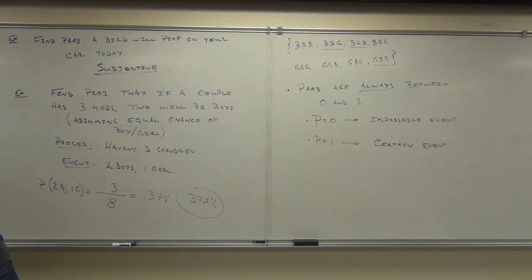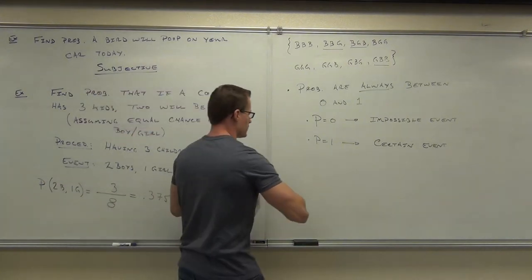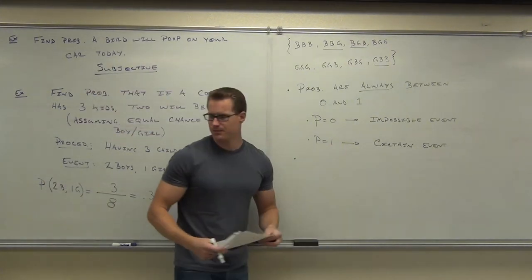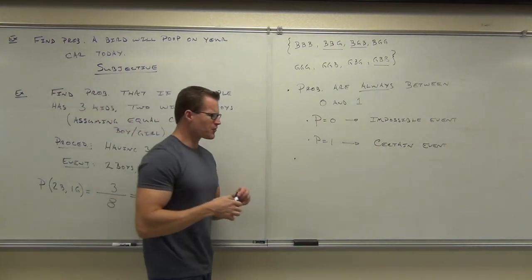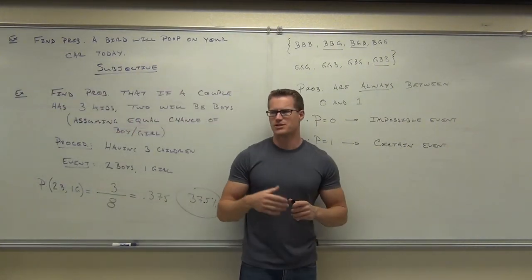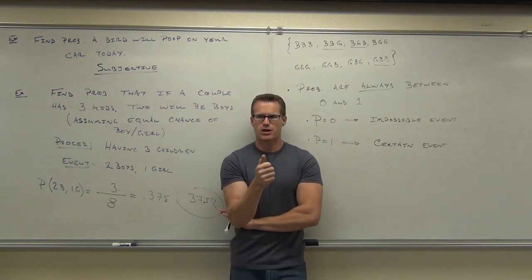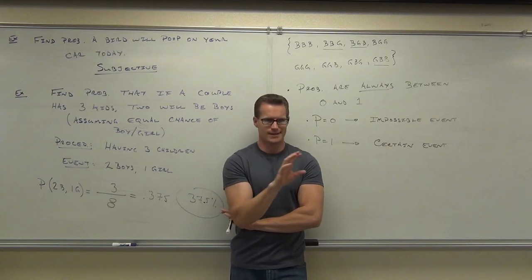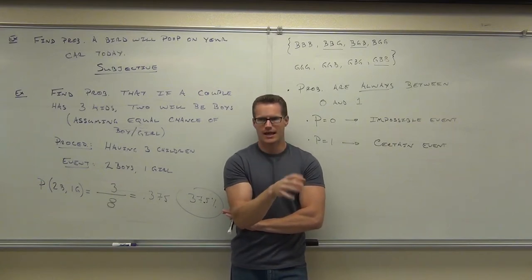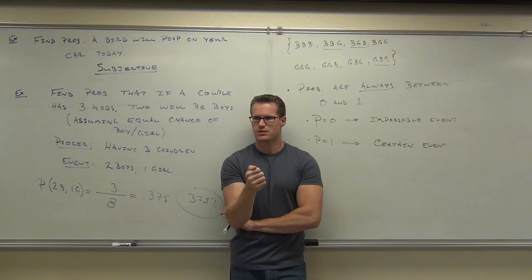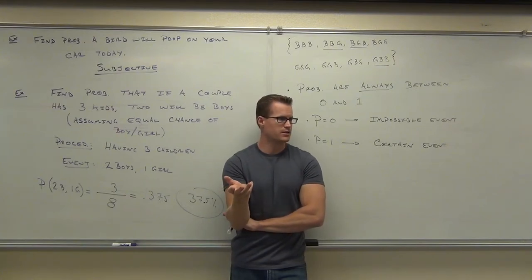This is called the law of large numbers. If you flipped a coin ten times, are you for sure going to get five heads and five tails? The probability of getting heads and tails is 50-50, but it's quite possible you could get only three heads and seven tails.